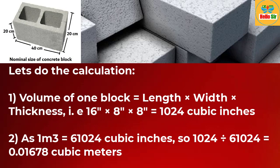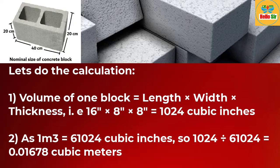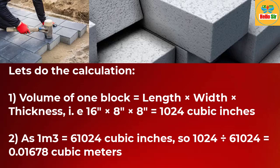Let's do the calculation to find out how many concrete blocks are required for one cubic meter. The volume of one block is found by multiplying all dimensions — length, width, and thickness. 16 inches long multiplied by 8 inches wide by 8 inches thick gives 1024 cubic inches.